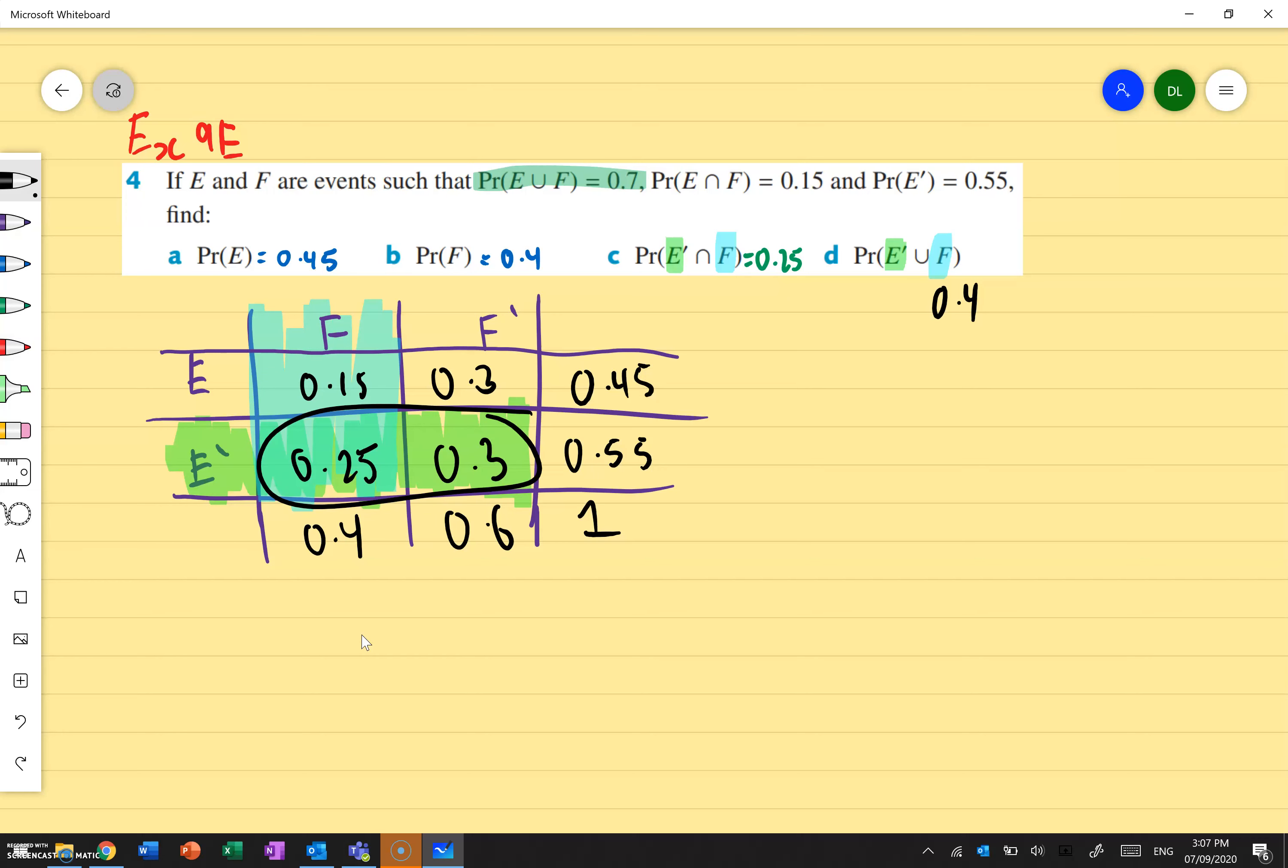Now over here I'm going to add them up. So F is 0.4 because add those together. E dash is these two together, which gives me 0.55 and add them together. And I take away whatever's overlapping 0.25. And that gives me an answer of 0.7. That's our answer.